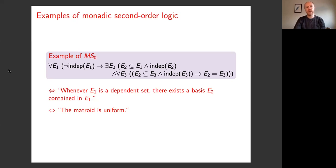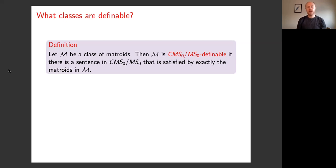That leads us quite nicely to our principal definition. Consider a class of matroids — let curly M be a class of matroids. Then curly M is definable in the language CMSO or MSO if there is a sentence in that language that is satisfied by exactly the matroids in curly M. So it is satisfied by a matroid if and only if that matroid belongs to the family curly M. What we have just seen is that the family of uniform matroids is MSO definable.